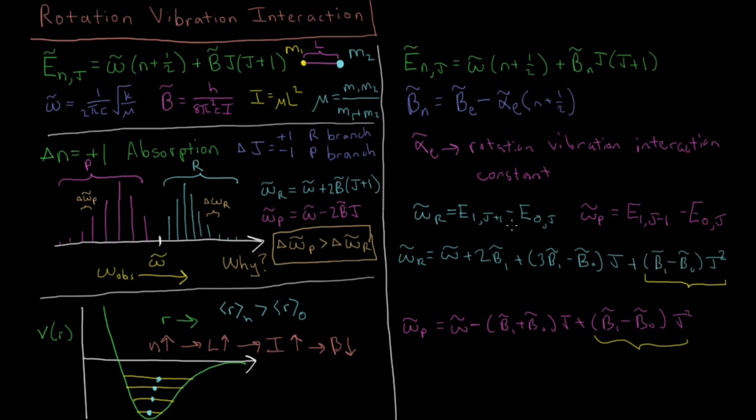And what this is going to do is, also we can notice that since B̅₁ is less than B̅₀, this whole term is going to be less than zero. So there's going to be this negative quadratic term which as you increase is going to pull your values further negative. So that's going to make the values of the R branch get closer together because they're increasing in frequency and it's going to pull them towards lower values.